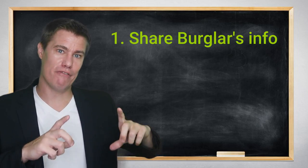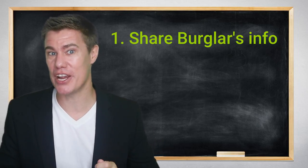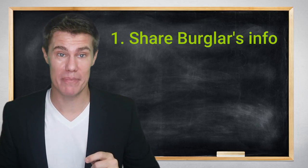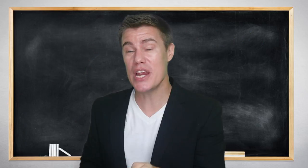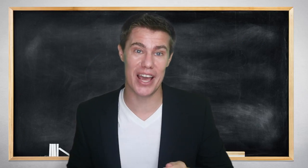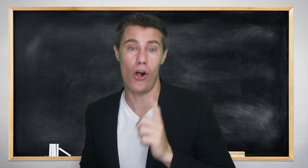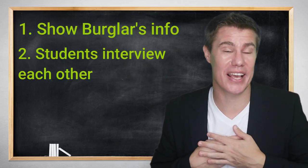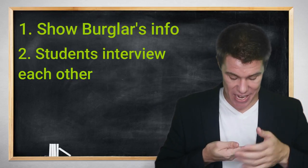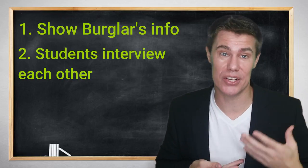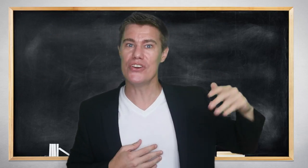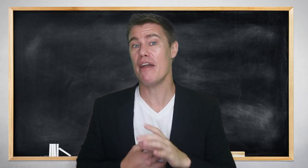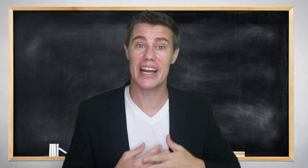Then have one of the cards' information and tell your students that there was a crime and they've got to find out which one of them is the culprit. All the students have to hide their cards — they can't show anyone — and they can use the information to answer questions. You give them the information for the culprit, everything except the person's name.